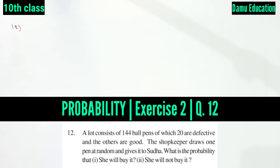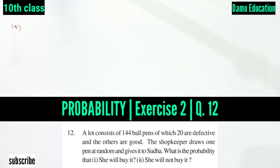In the twelfth question, a lot consists of 144 ball pens, of which 20 are defective and the others are good. The shopkeeper draws one pen at random and gives it. What is the probability that: first, she will buy it; second, she will not buy it.